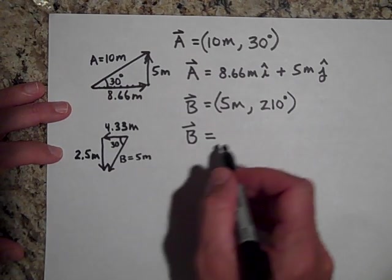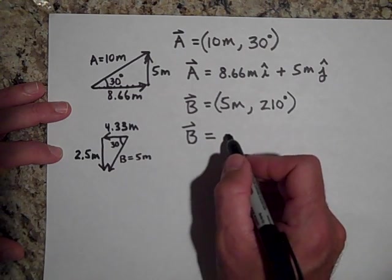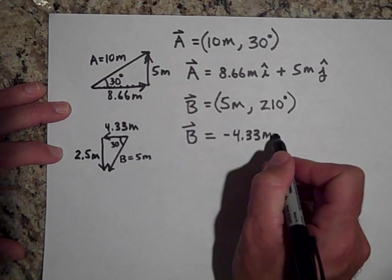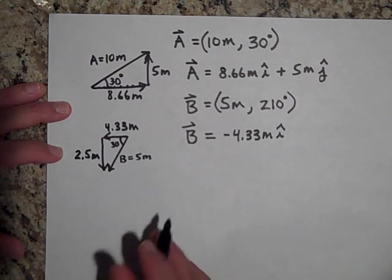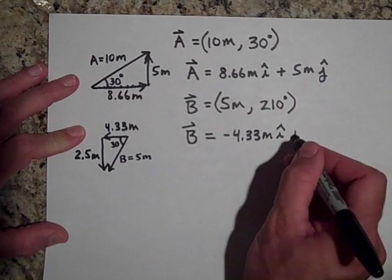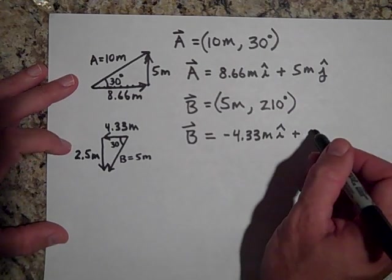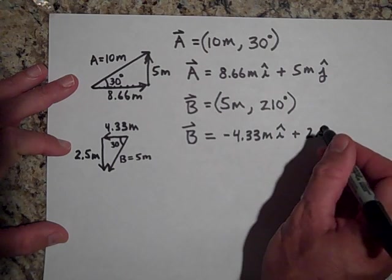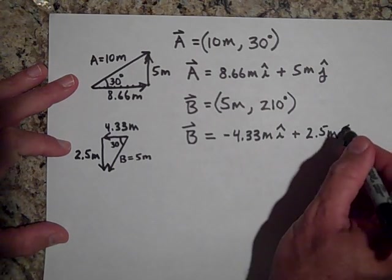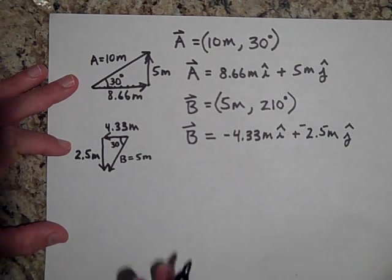Writing vector B in unit vectors: in the x-direction that's negative 4.33 meters times the unit vector i, plus negative 2.5 meters times the unit vector j.